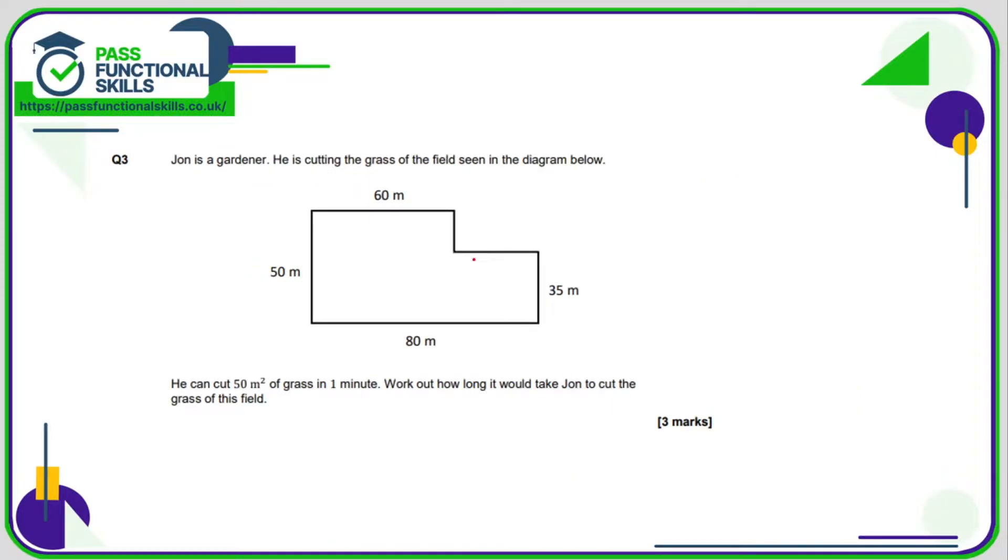Question number three: the first thing we need to do is work out the area of the field. As this is a compound shape, we're going to break it into smaller regular shapes—two rectangles. We'll call this shape A and shape B. Shape A is a rectangle with dimensions of 60 and 50, so the area is 60 times 50, which is 3000 square meters. And B is 35 times...